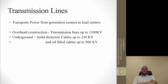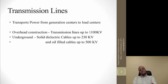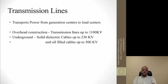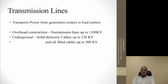Transmission lines transport power from point A to point B — point A being the generator or generation center, and point B being the load center. Normally generators produce power at up to 26 kV with up to 1000 megawatts. You step up the voltage to reduce current, since power is voltage times current, allowing the same power to be transmitted with less current-carrying conductors.